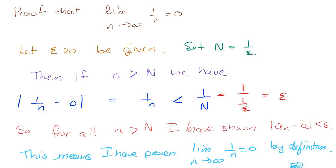For every epsilon greater than zero, there exists a capital N in the natural numbers, such that for all little n's bigger than capital N, the absolute value of a_n minus a is less than epsilon.